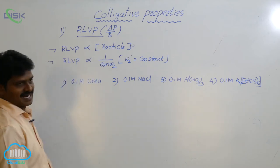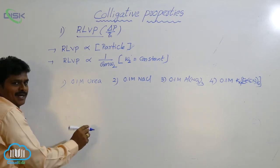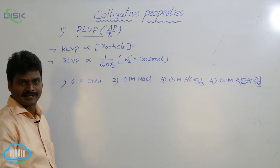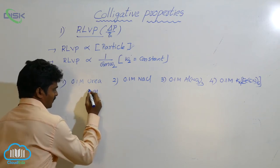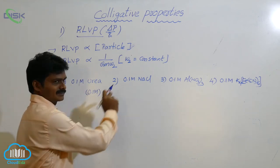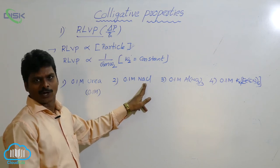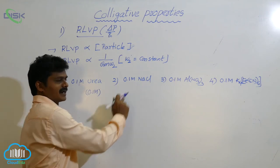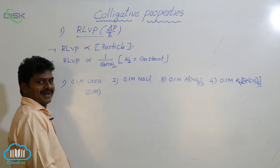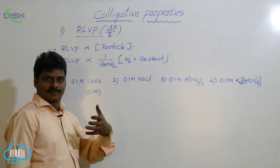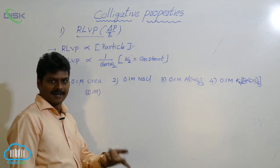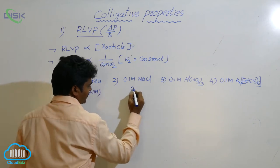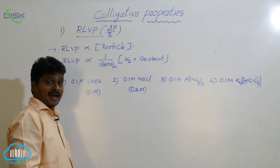To find which has highest RLVP, calculate particle concentration for each. Urea is a non-electrolyte, so its particle concentration equals solution concentration: 0.1 molar. NaCl dissociates into 2 ions, giving particle concentration = 0.1 × 2 = 0.2 molar. Aluminum nitrate dissociates into 1 Al³⁺ and 3 NO₃⁻ ions (4 total), giving 0.1 × 4 = 0.4 molar.